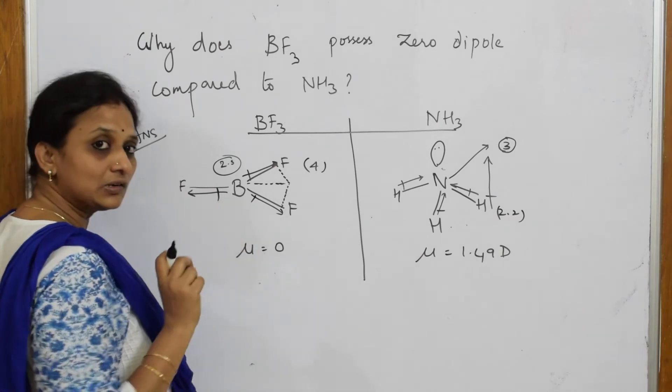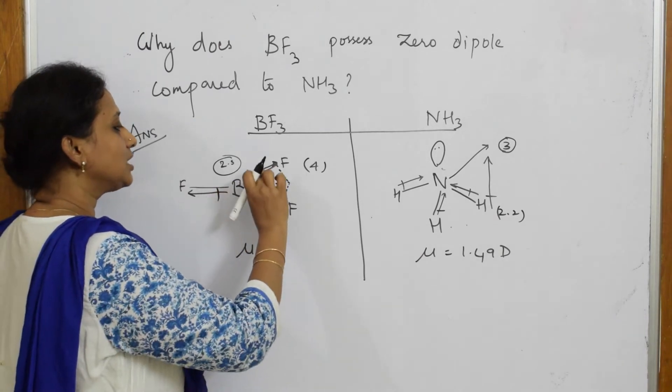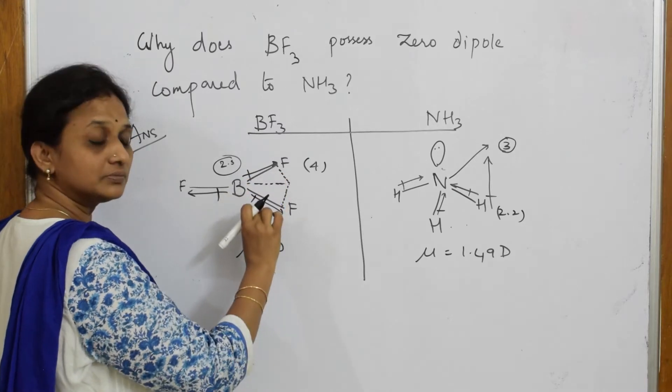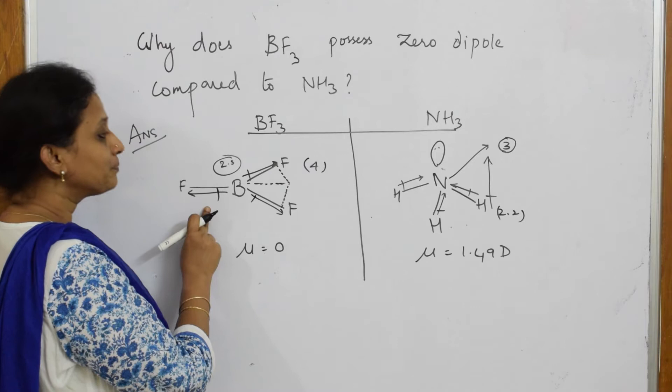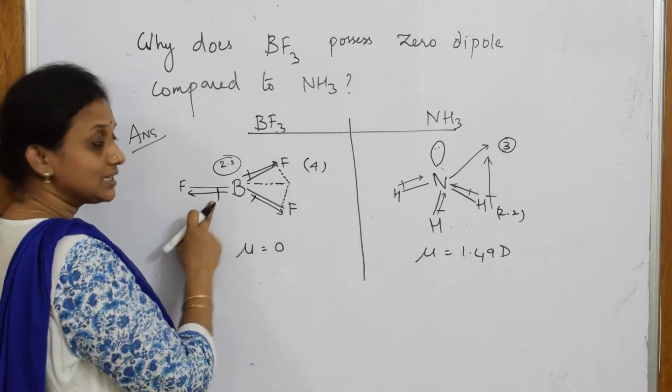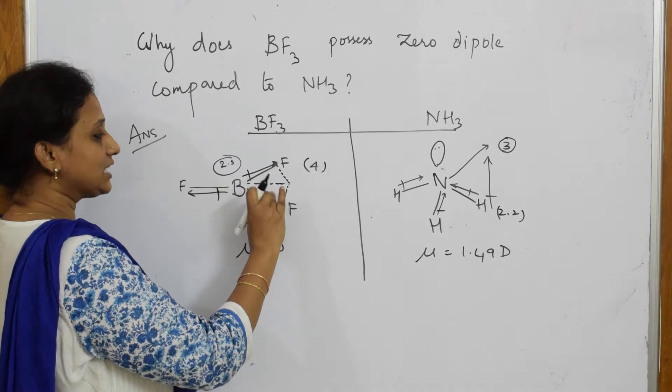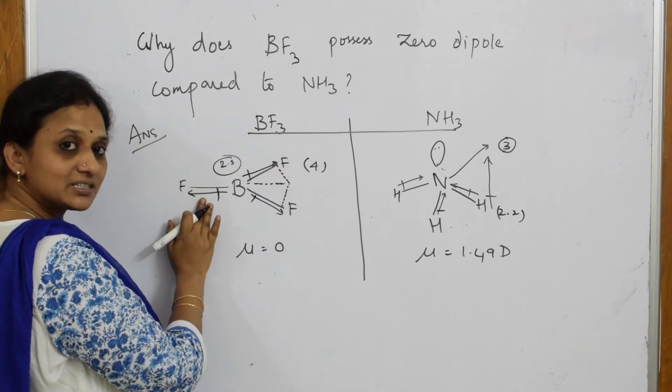Now observe. According to parallelogram law of forces, the resultant of these two is equal and opposite to the third one, that is what is your parallelogram law. Now the resultant of 2-2 is equal and opposite to the third one, so these two gets cancelled with this.